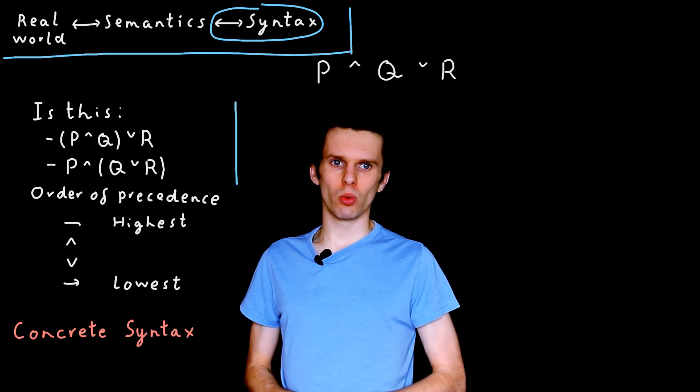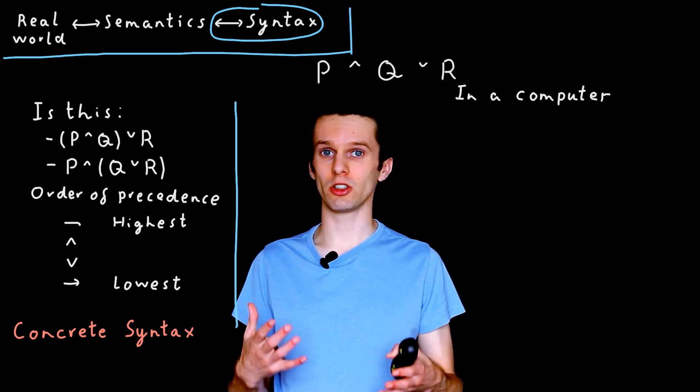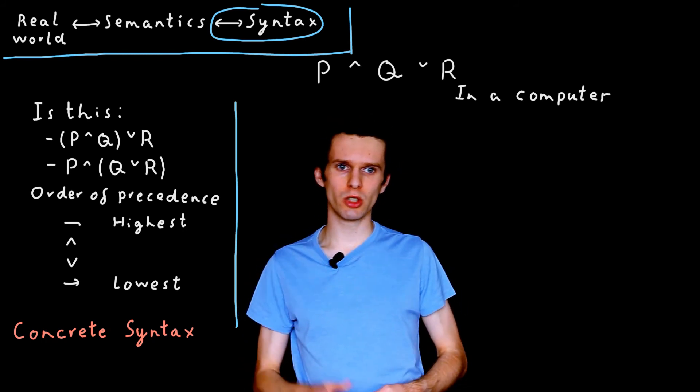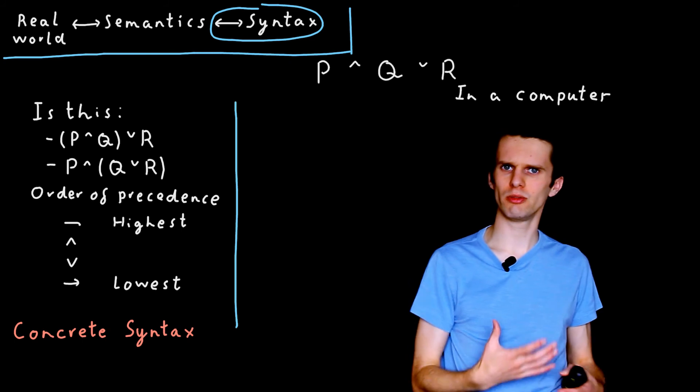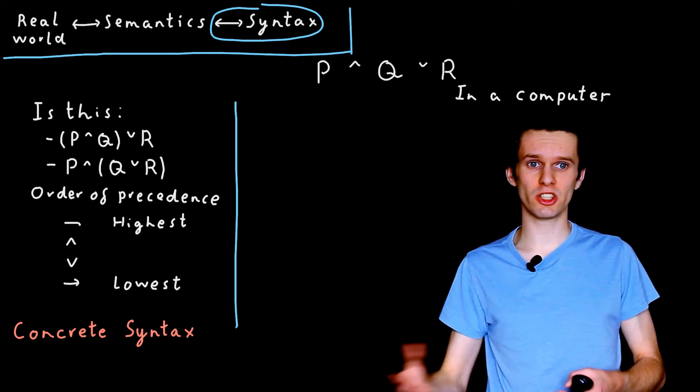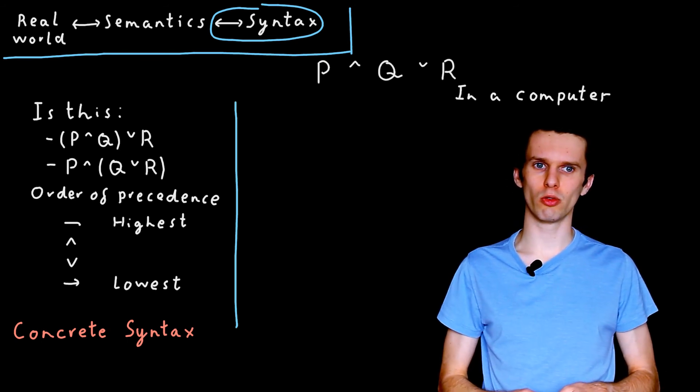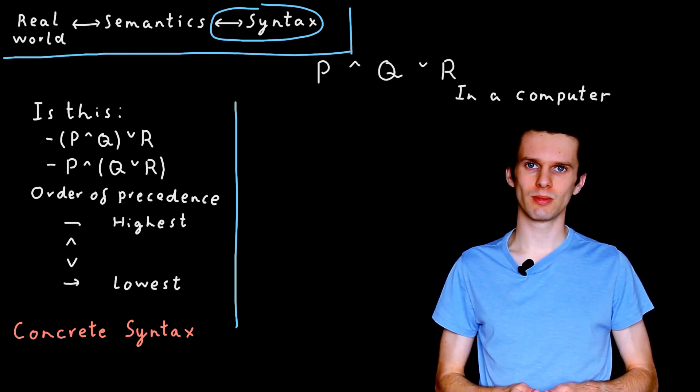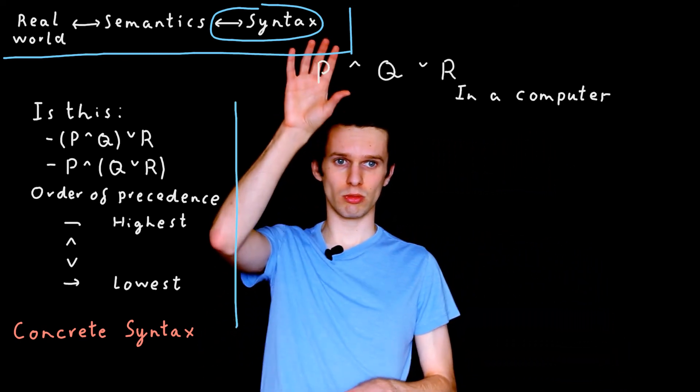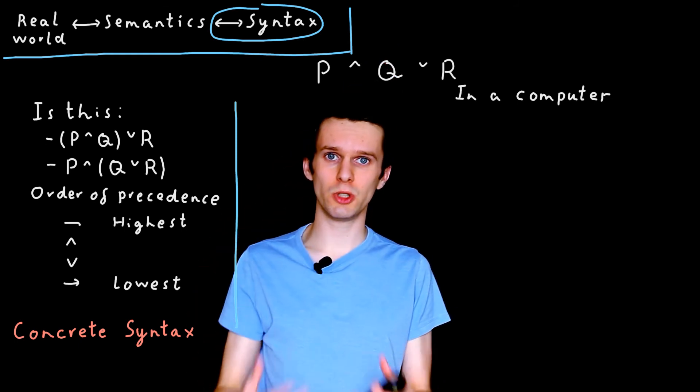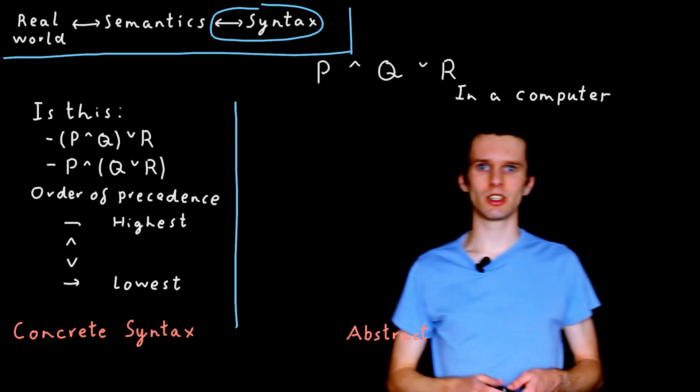The thing is, we really want a bit of a different representation when we're storing syntax within a computer. We don't want to store syntax purely as strings. We want to store it as some kind of data structure. This makes it more efficient and easier to work with when we're automating processes of working with logic. And a representation of a sentence written in a certain syntax in a computer under a data structure, we call an abstract syntax.